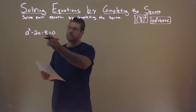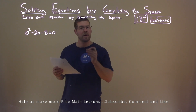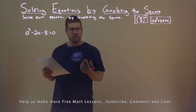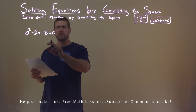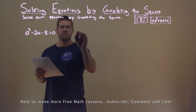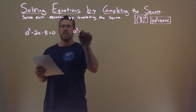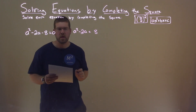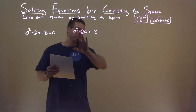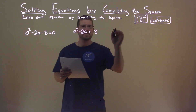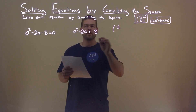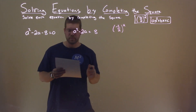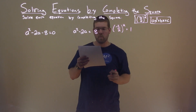We're given this problem right here: A squared minus 2A minus 8 equals 0, and we need to solve this by completing the square. First thing I'm going to do is add an 8 to both sides, so we have A squared minus 2A equals a positive 8. I look at my B value, which is negative 2. Using my formula: negative 2 divided by 2, all squared — that comes out to be a positive 1.